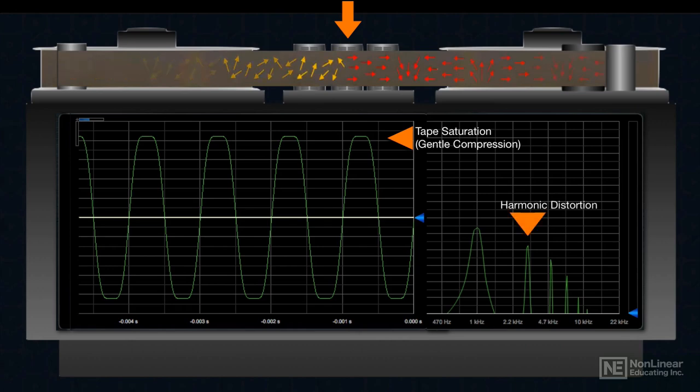Excess tape saturation is technically a flaw, but in small amounts it can add a little analog warmth and presence to the signal. And this effect, if managed carefully, is a part of the appealing sound of analog tape.